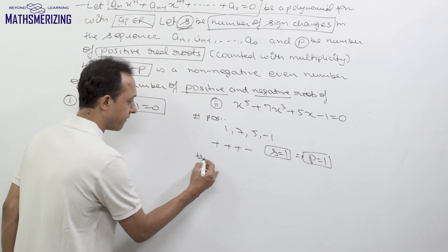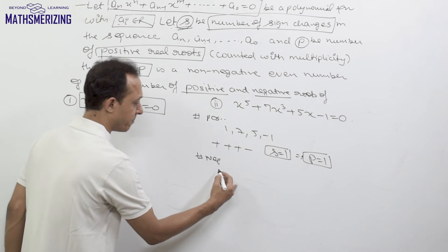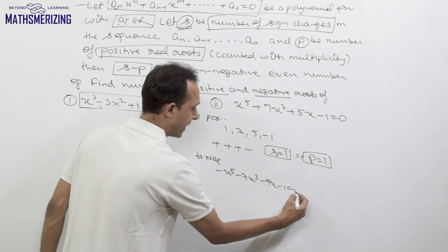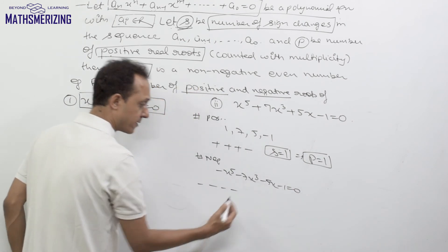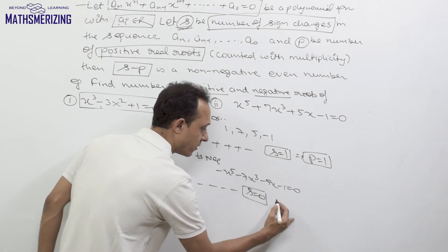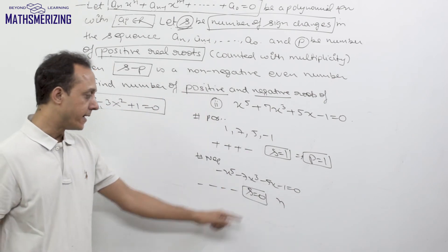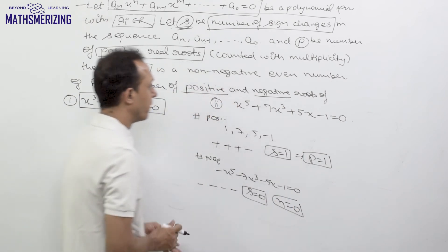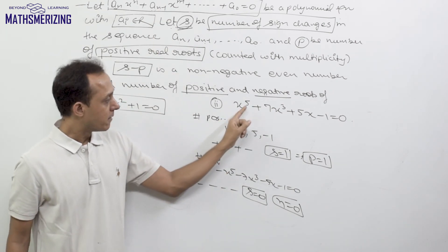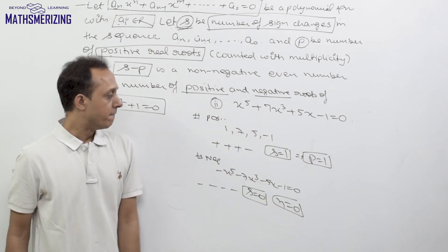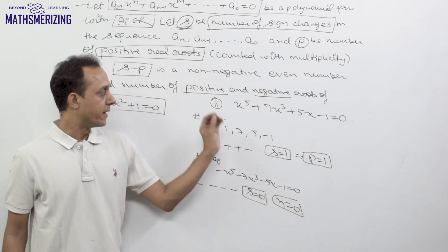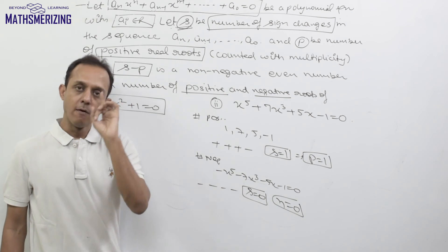For negative real roots, we replace x with minus x, giving -x⁵ - 7x³ - 5x - 1 = 0. The signs are all minus: minus, minus, minus, minus. So there is no sign change, meaning s = 0, and the number of negative real roots n cannot exceed s. Therefore n = 0. Descartes' Rule of Signs says this fifth-degree equation has exactly one positive real root and no negative real roots — that is, exactly one real root.